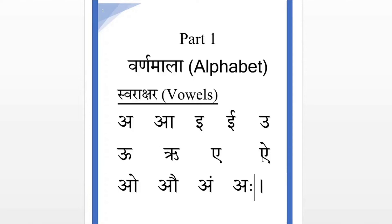This A has two sounds: A and I. The same way, O also has two sounds: O and O. Both are right. Native speakers pronounce A and O. Both are right.